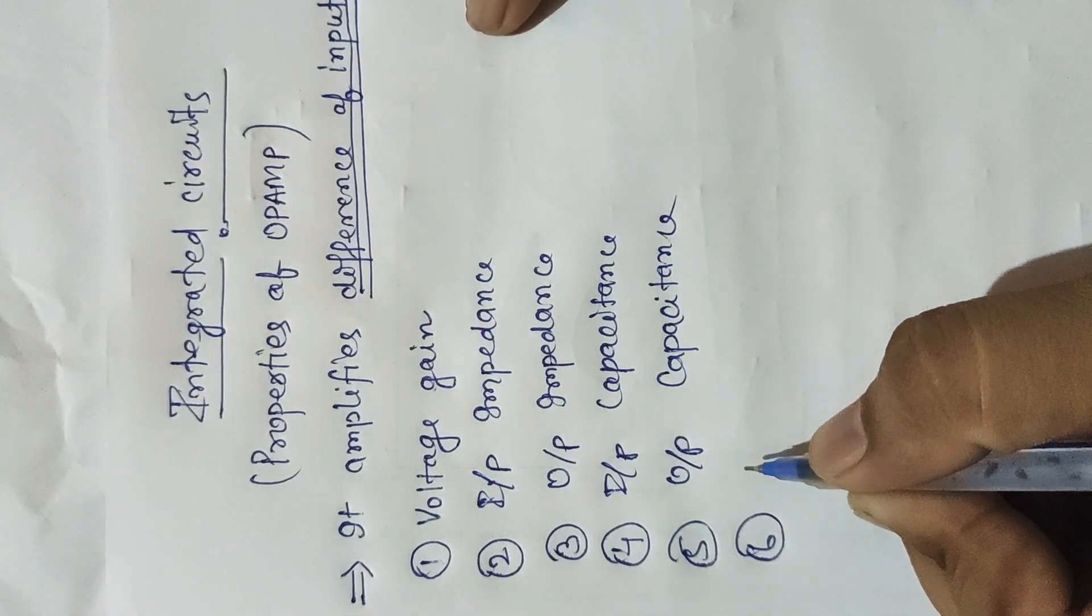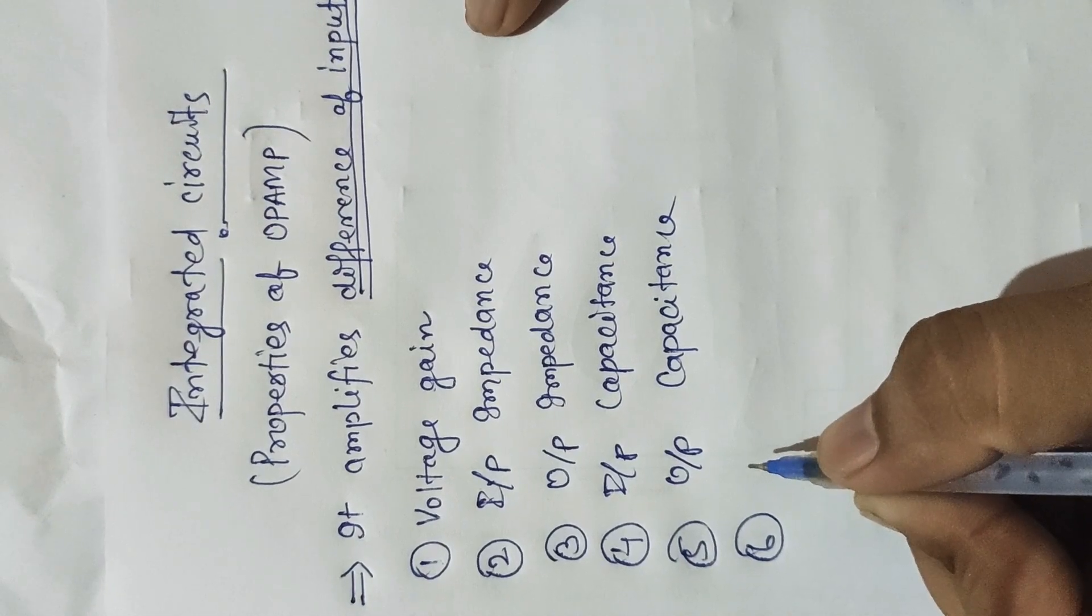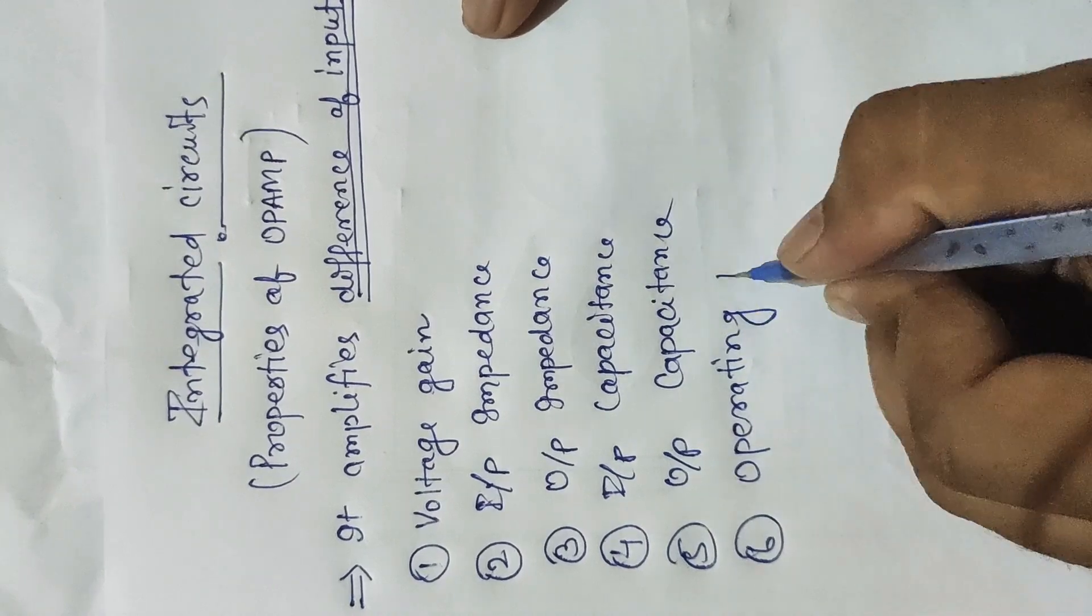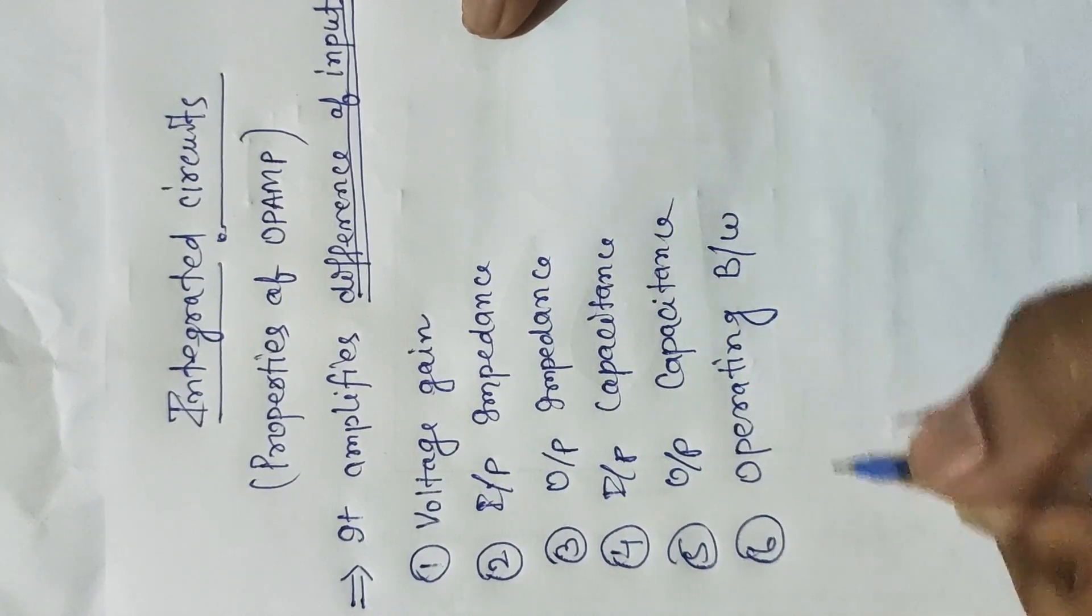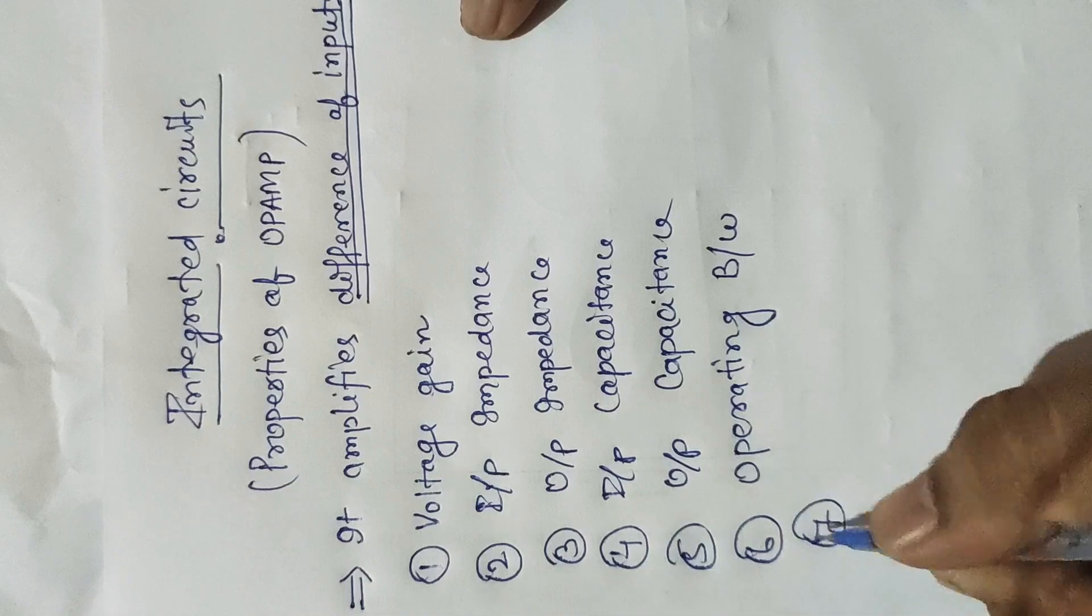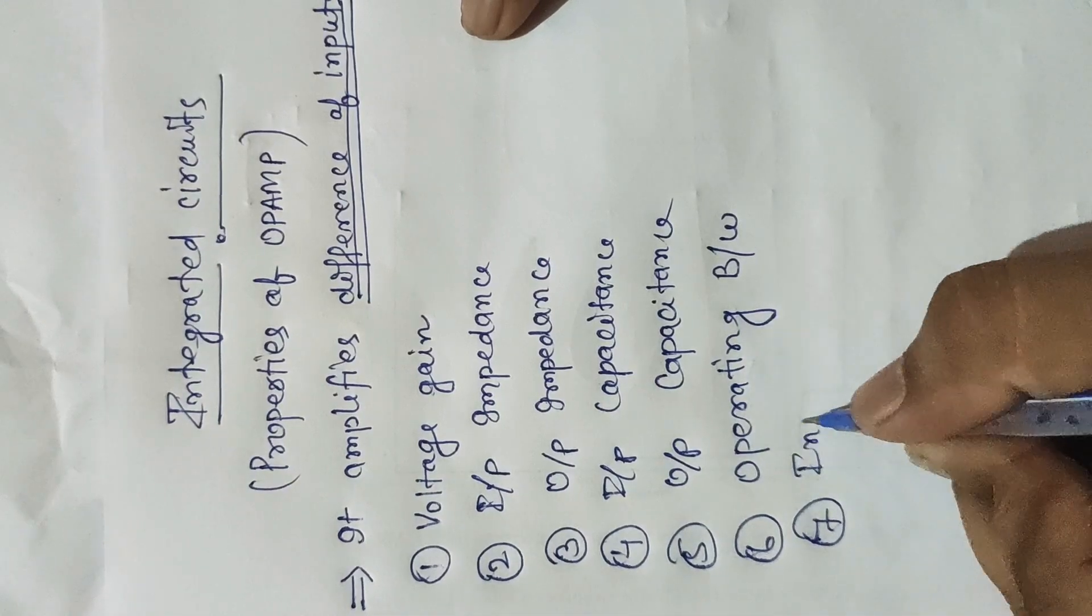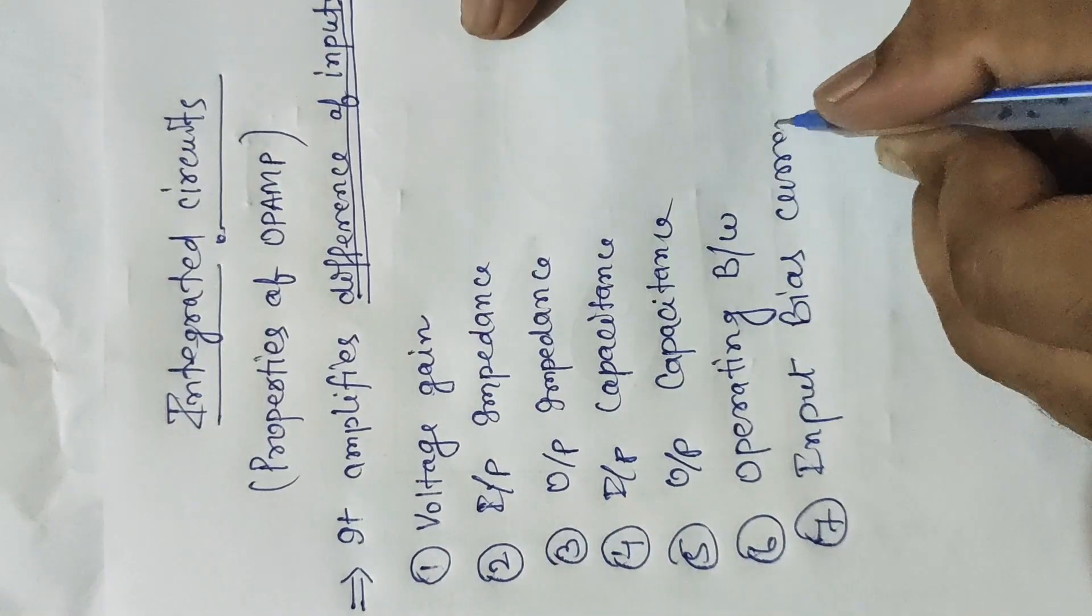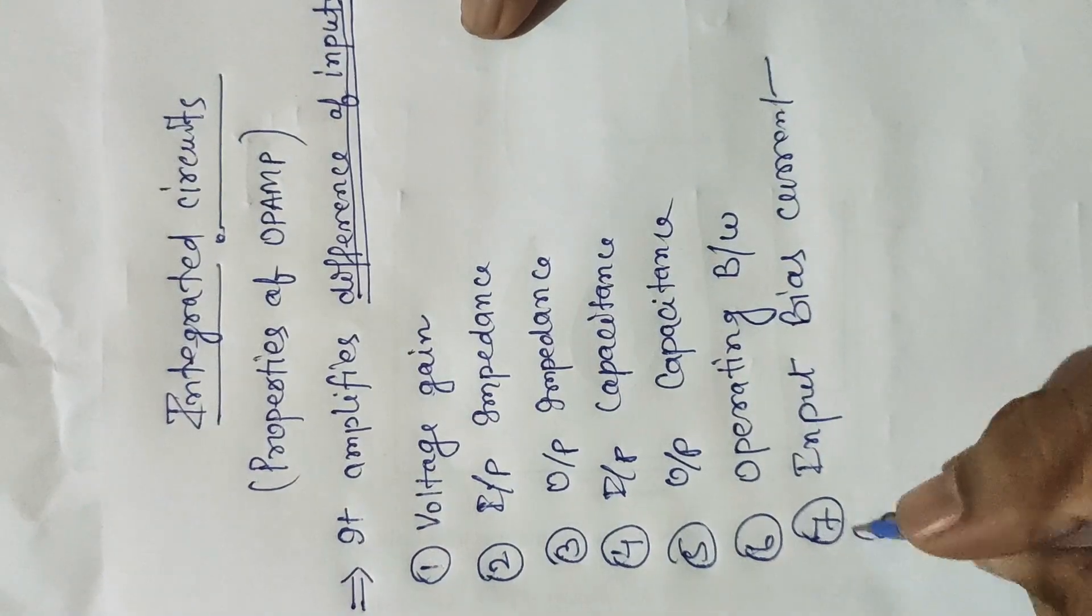Number six, operating bandwidth, operating frequency, number seven, input bias current, number eight.